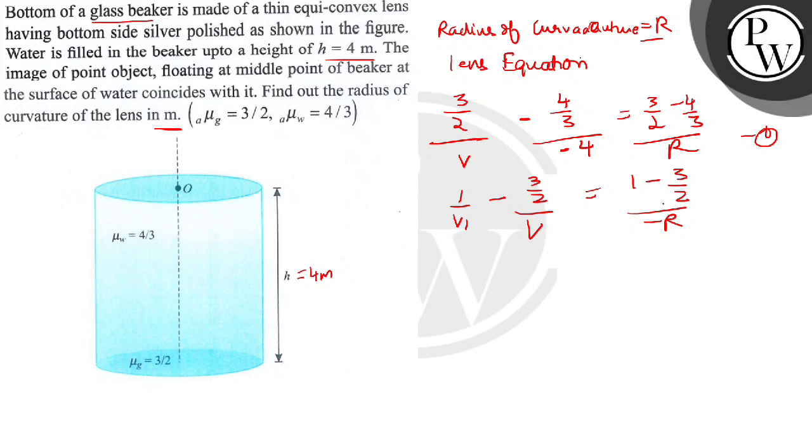So now for final image to be obtained again at the same position, the image and the object for the reflection from this mirror must be at the same place. Hence the object at V should be at center of curvature of the mirror. This means that V1 is equal to minus R. You have to remember that, it is very important.